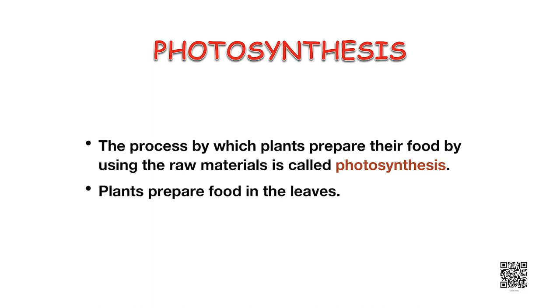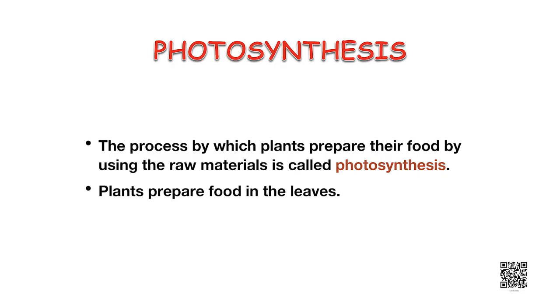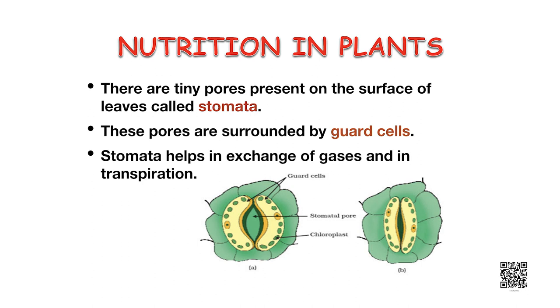Water and minerals are present in soil which are absorbed by roots. Chlorophyll is the green pigment present in leaves and green parts of the plants which helps in capturing the energy of sunlight. The process by which plants prepare their food by using the raw materials is called photosynthesis. Plants prepare food in the leaves. Tiny pores present on the surface of leaves are called stomata. These pores are surrounded by guard cells. Stomata help in exchange of gases and in transpiration.